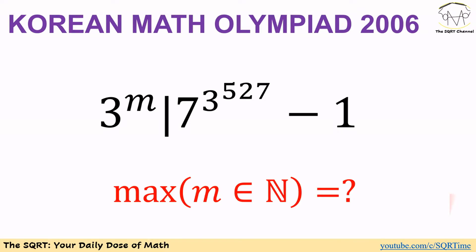Hello everyone, welcome to the SQRT channel. In this video we're going to talk about a problem from the Korean Math Olympiad from 2006. The problem states: 3 to the power of m is a divisor of 7 to the power of 3 to the power of 527 minus 1, and we want to find the maximum possible value of m to satisfy this equation.